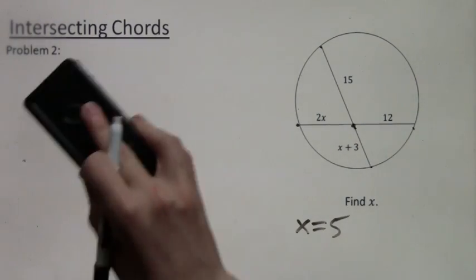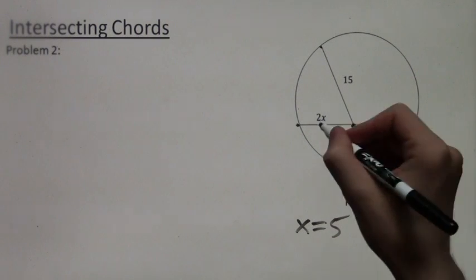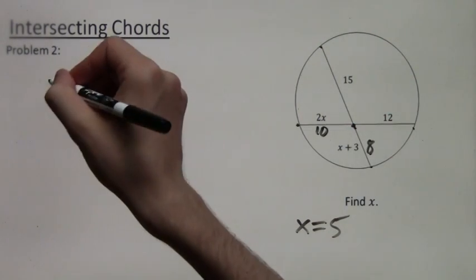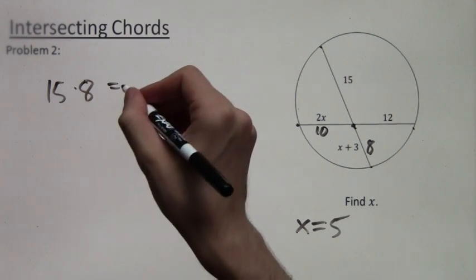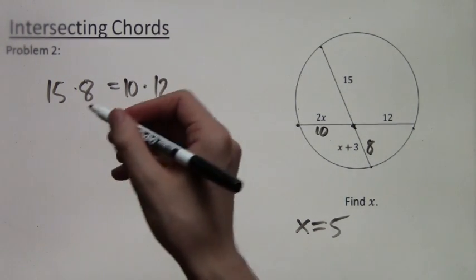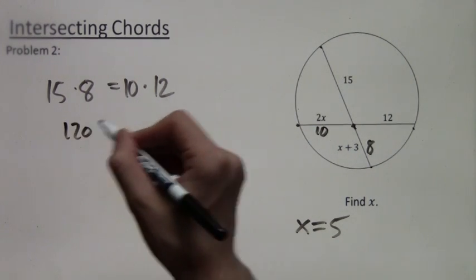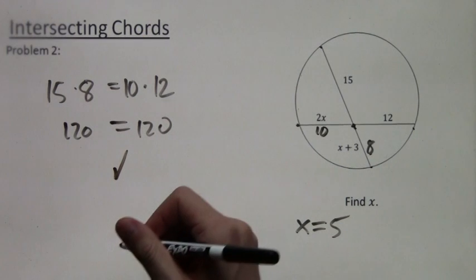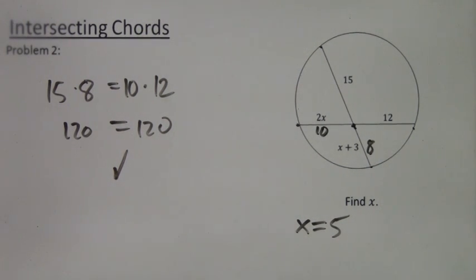It's always a good idea to check your answers. Plugging in 5, we end up with 15 times 8 equals 10 times 12. According to the theorem that should be true, and when we multiply these out we get 120 equals 120. So our answer is correct.